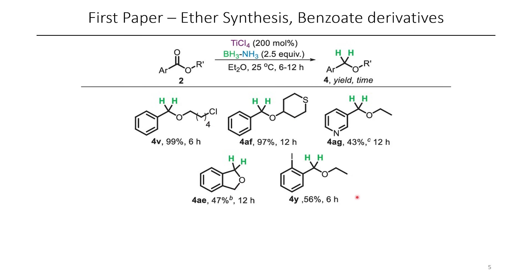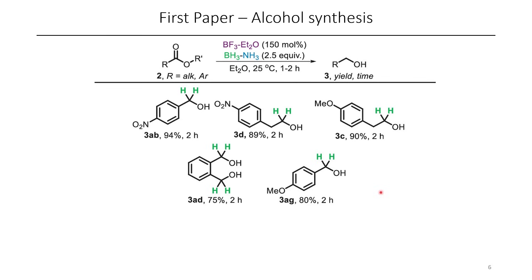We also have a pyridine as well as this iodide, and if you'd like to see all of the examples that the authors explored in their scope, I'd encourage you to check out the full paper. As I mentioned earlier, the authors could also prepare alcohols if they used BF3 etherate instead of the titanium tetrachloride. This sort of reaction is already fairly well known with LAH — if you want to make an alcohol from an ester, that's really well known — so whether or not this chemistry is as useful remains to be seen.